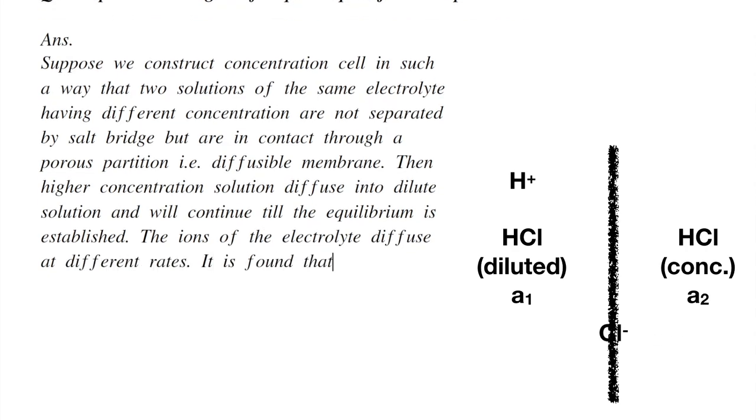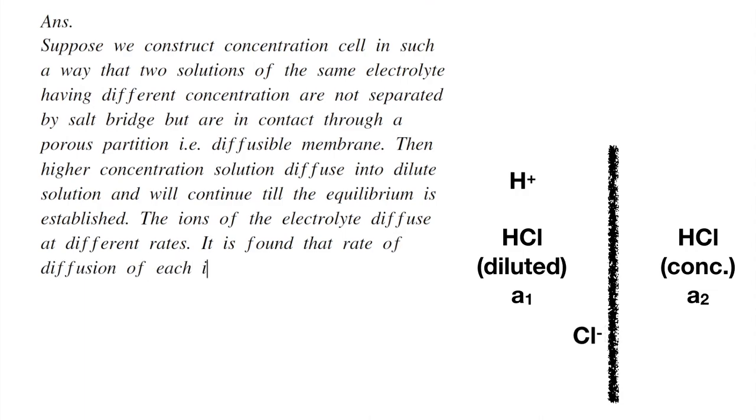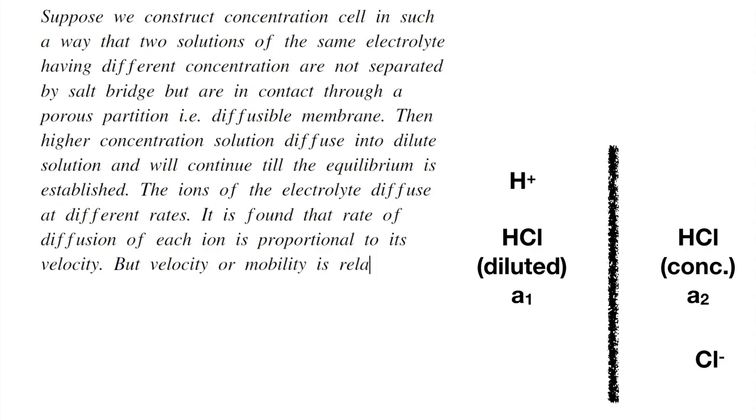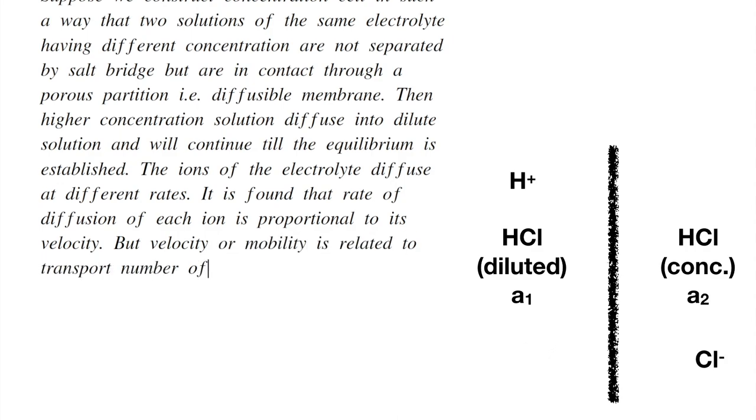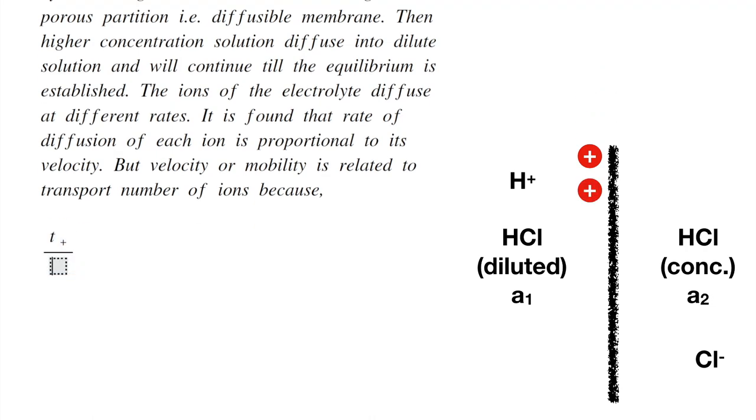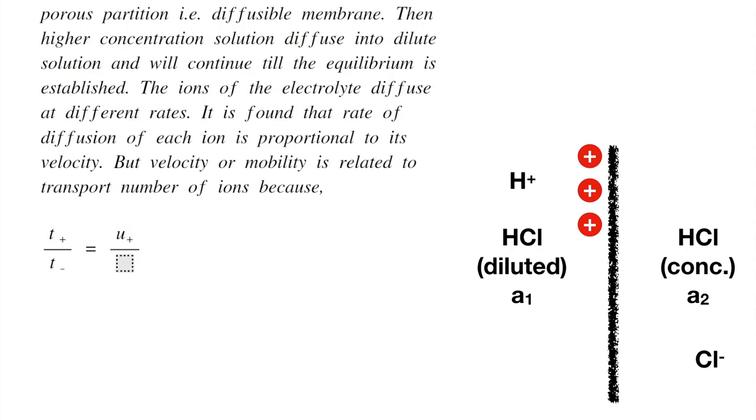It is found that rate of diffusion of each ion is proportional to its velocity, but velocity or mobility is related to transport number of ions because the ratio of transport numbers t+ divided by t- equals the ratio of mobility of the ions μ+ divided by μ-.